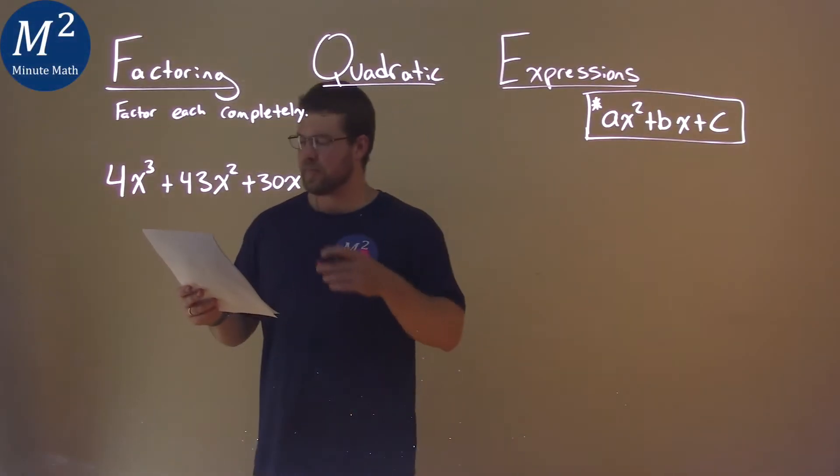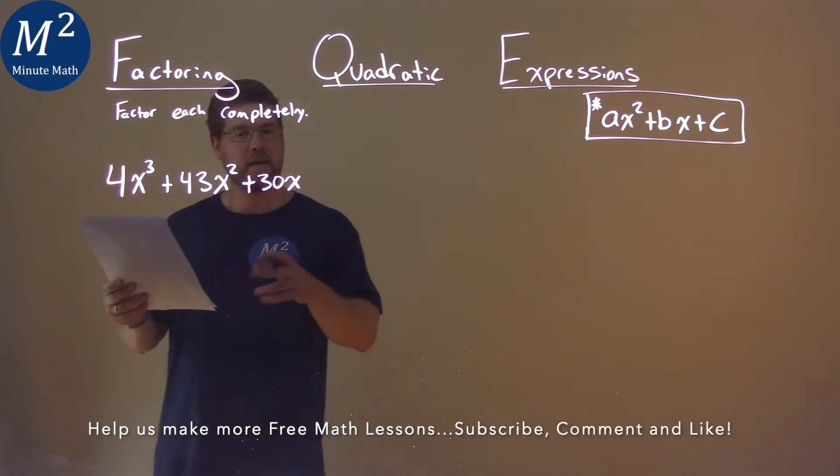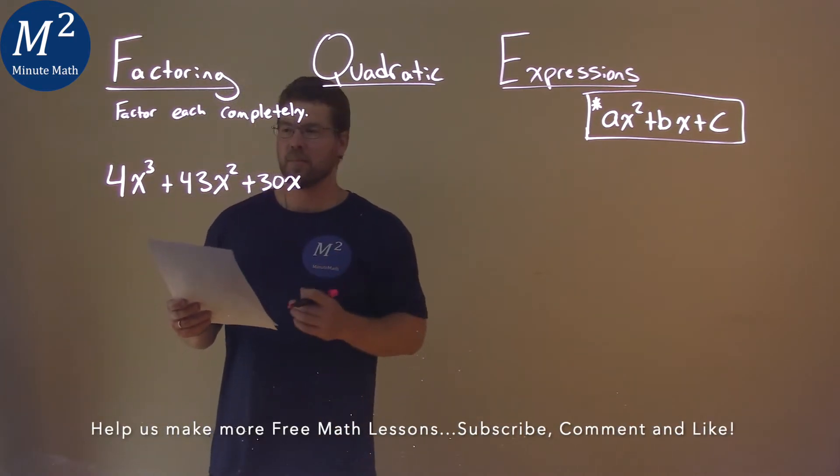We're given this problem right here: 4x to the third plus 43x squared plus 30x, and we need to factor this completely.